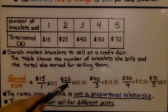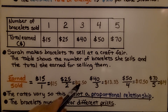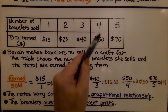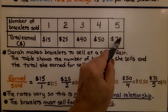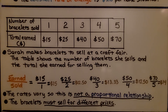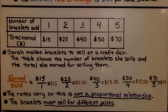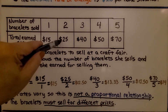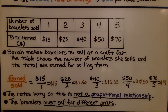When she sells two bracelets for $25, the rate is $12.50. When she sold three for $40, that's $13.33. For $50 divided by four, we get $12.50. And $70 divided by five gives $14. The rates vary — $15, $12.50, $13.33 — they're changing. So this is NOT a proportional relationship. The bracelets must sell for different prices; maybe one type sells for $15 and another for $10, which is why it's not proportional.